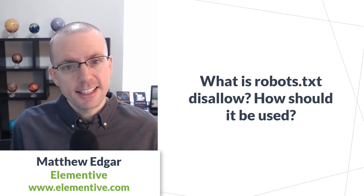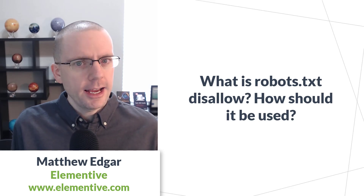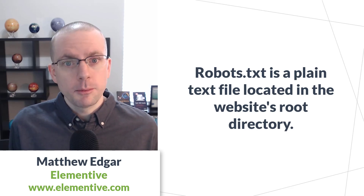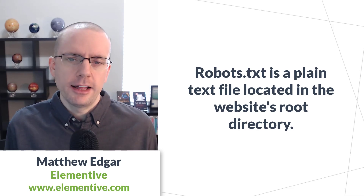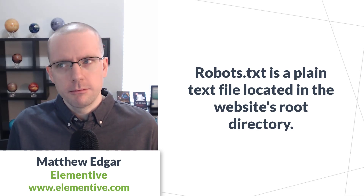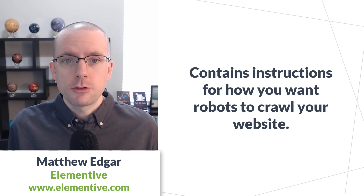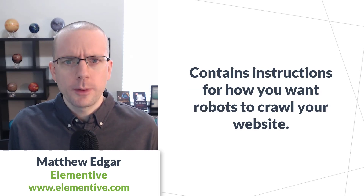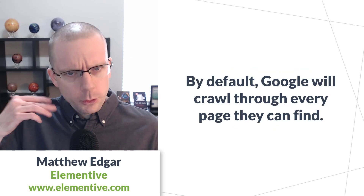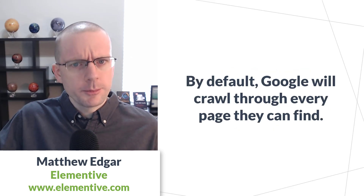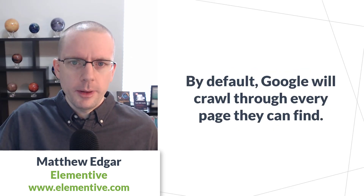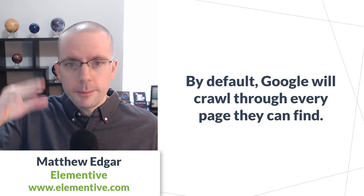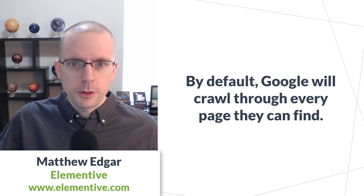What is a robots.txt disallow statement and how should you use it on your website? A robots.txt file is a plain text file located in your website's root or main directory that contains instructions about how you want robots to crawl through your website. For example, Google is going to come to your website and crawl through all the pages they can find, opening up those files and extracting content from them.